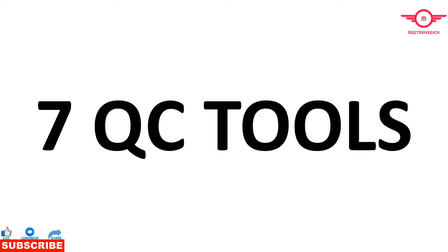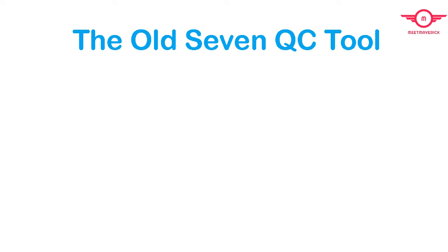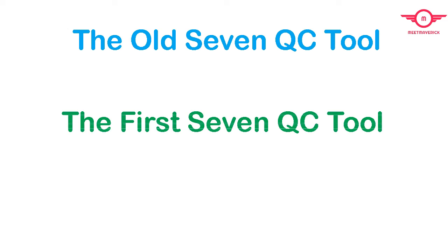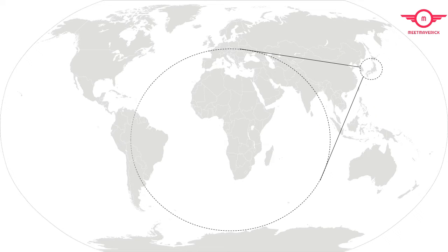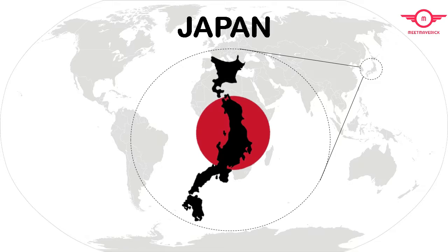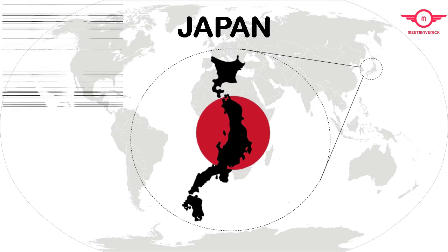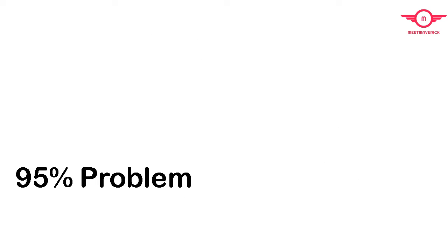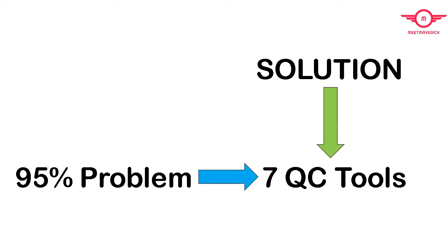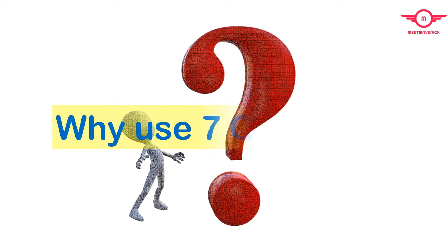Hello guys, today in the world of cutting edge technology, quality is very important, but to maintain the quality, sometimes problems arise. So today I will explain the 7 QC tools. The 7 QC tools are also known as the Old 7 QC Tools, the First 7 QC Tools, and the Basic 7 QC Tools. They were introduced in Japan when the country was undergoing a major quality revolution, made mandatory for all industrial training by Karou Ishikawa. As per Karou Ishikawa, 95% of problems are solved by these tools.